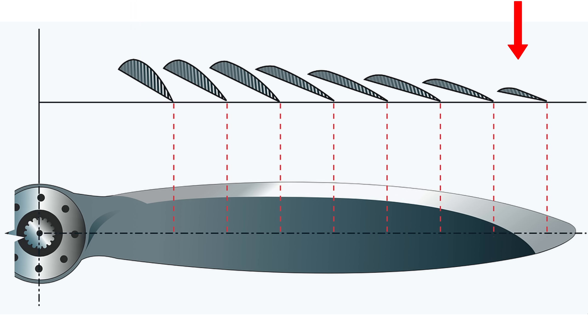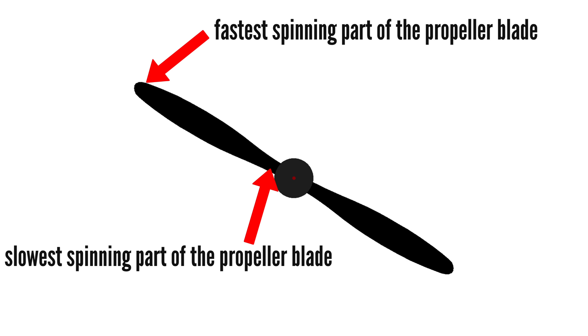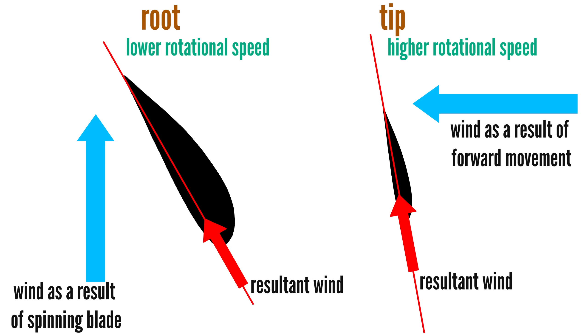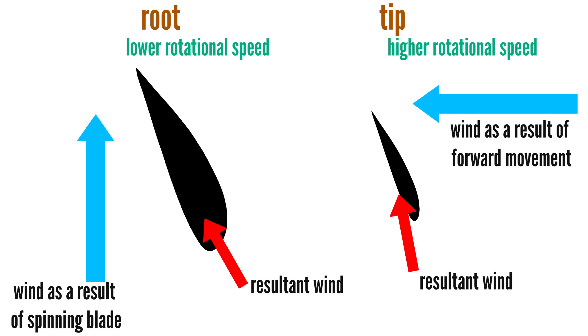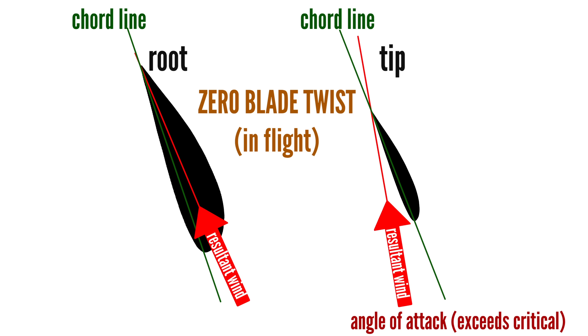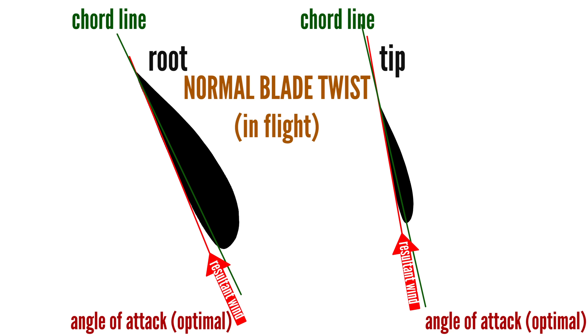Looking at a propeller blade closely, one can see the blades are twisted along their span, with the amount of twist changing from a high angle at the root to a shallower angle towards the tip. Because the tip of the propeller spins much faster than the root, the tip hits the oncoming air at a higher angle of attack than the root. If the blades did not have any twist, not only would the thrust levels vary wildly across the length of the blade, but the propeller tip would constantly be in a stalled condition due to excessive angle of attack, while the root would possibly have a negative angle of attack, effectively creating rearward thrust.